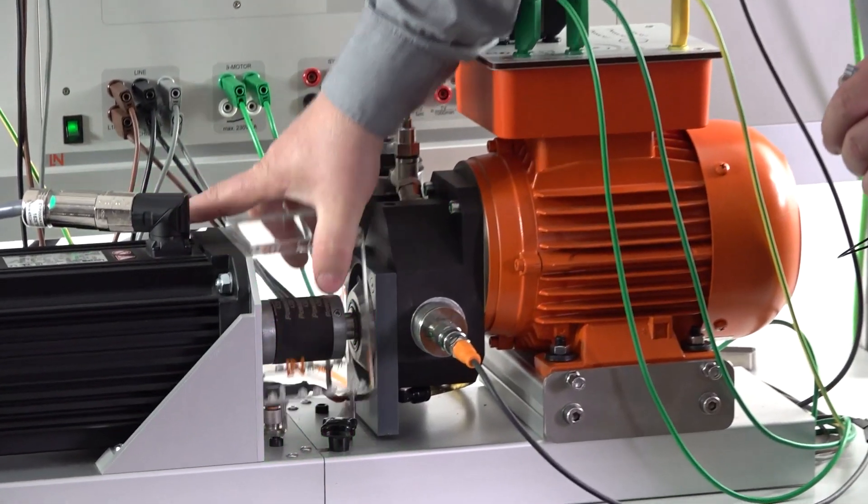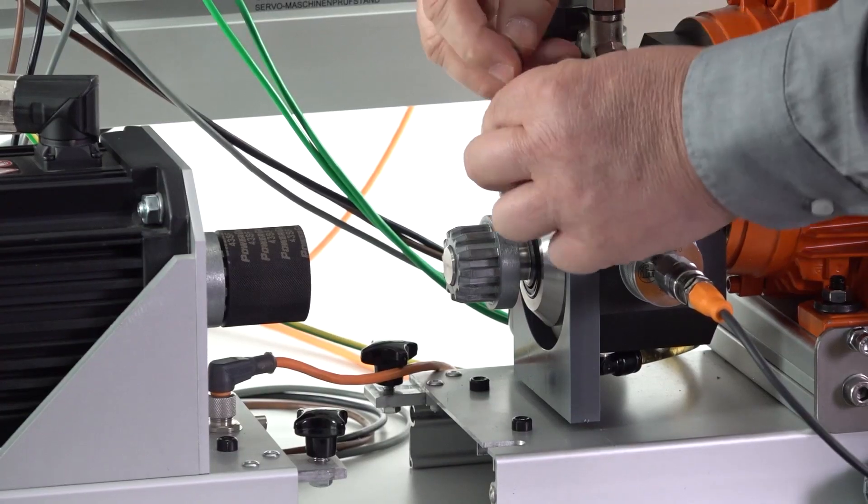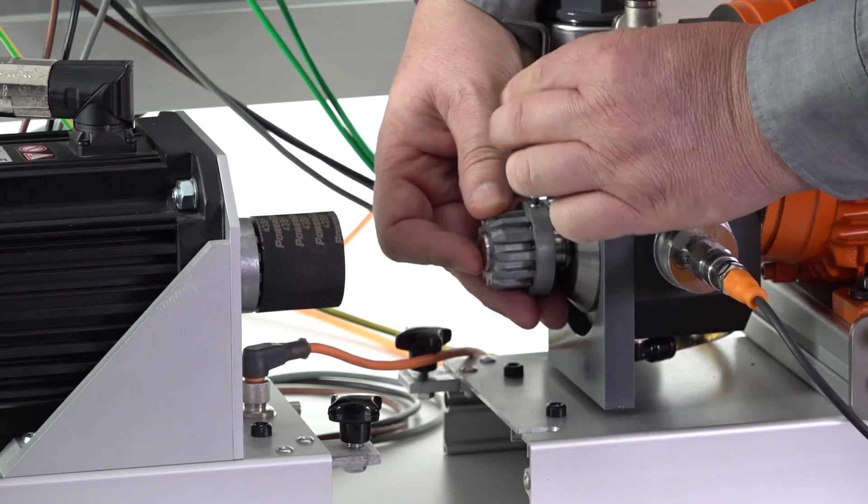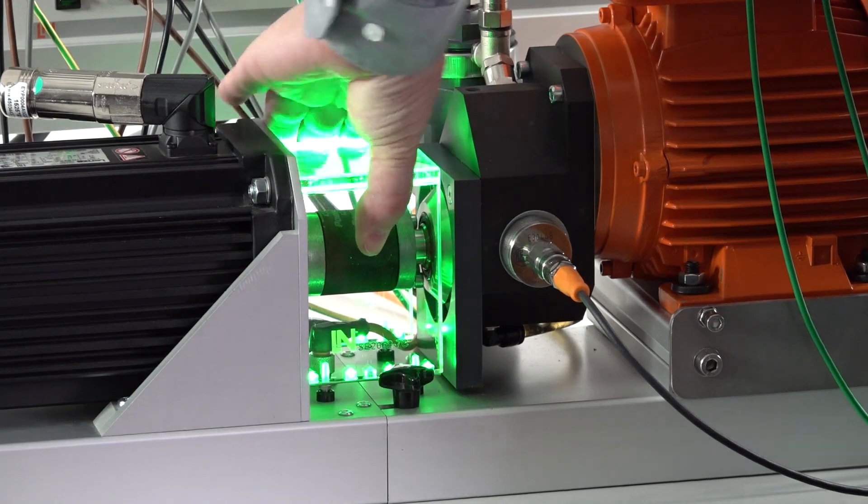And this will be mounted on the drive. So I will remove the shaft cover, remove the coupling. Now I will open the screw, remove the coupling, and replace it with the unbalanced coupling. Fasten it. And now we have a drive with an unbalance.